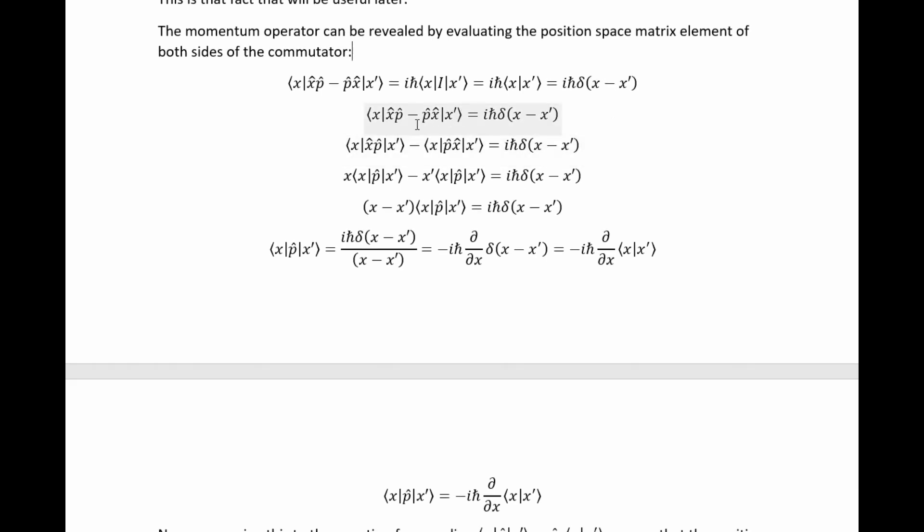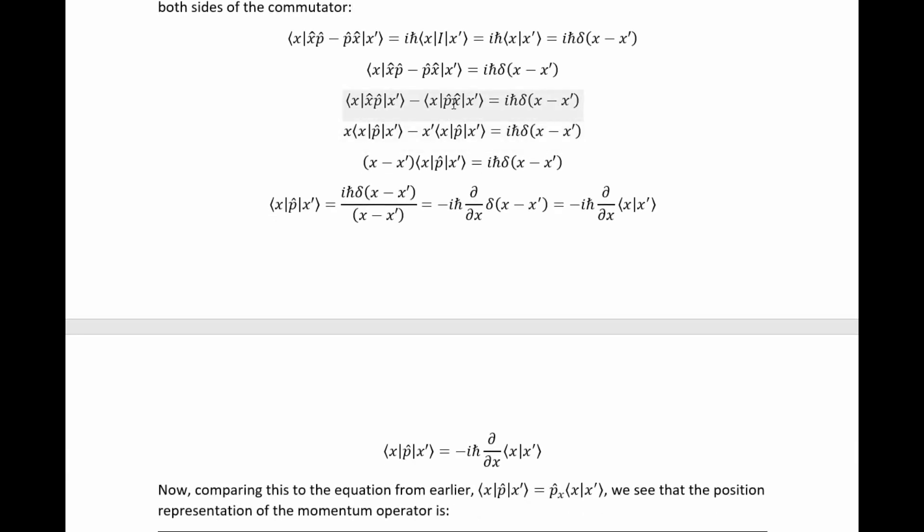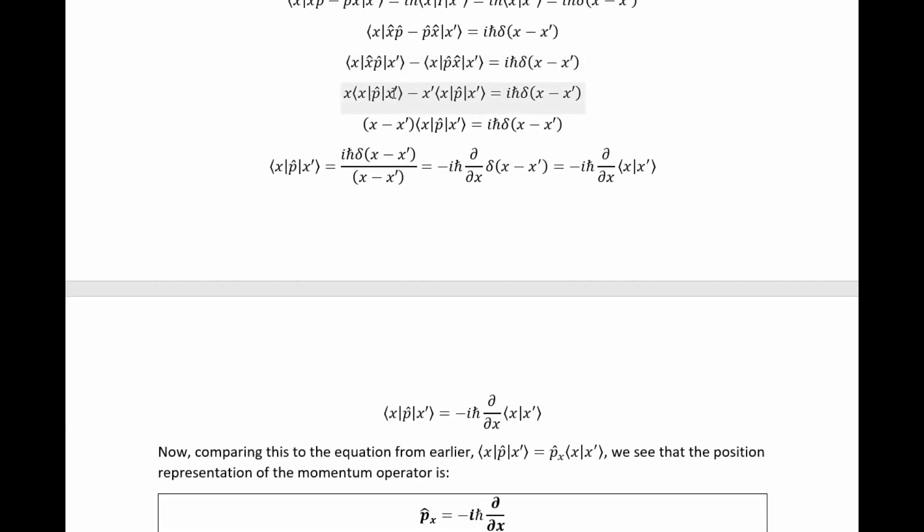But then, of course, we can just distribute these ket and bra vectors, and we get these two quantities here. And we know, as stated above, what happens when we act these x operators on these x position states. We just get the value of the position, which of course is just an eigenvalue and can be pulled out. So then if we factor out these matrix elements of the momentum operator, then we arrive here.